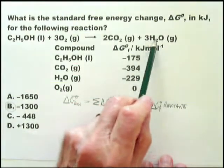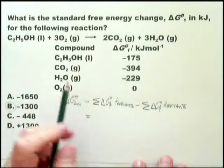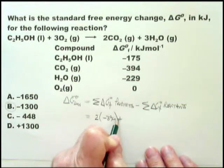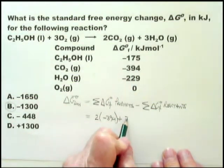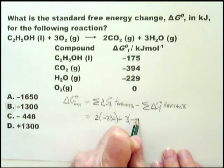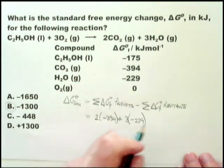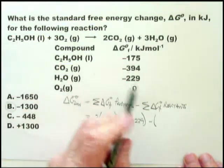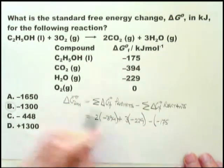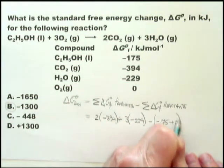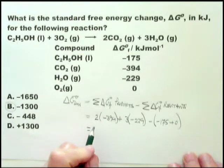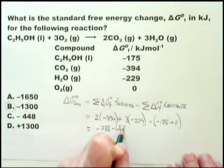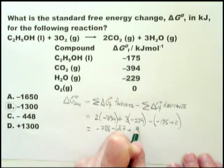So we look at the product. It's carbon dioxide and water. So that equals the sum of 2 times minus 394, plus 3 times minus 229. This is for water. And minus the sum of, put in brackets, of ethanol, which is minus 175, plus oxygen, which they say is 0. And so this equals minus 788 minus 687 plus 175.